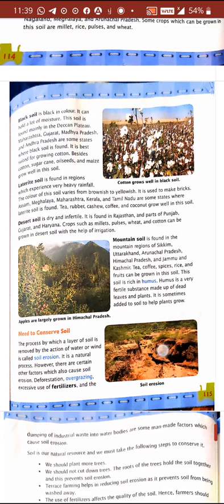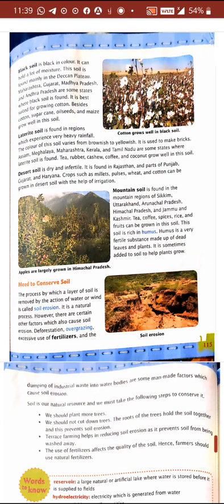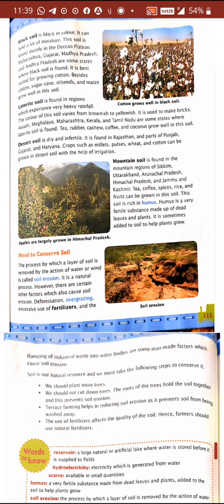Black soil is black in color and holds a lot of moisture — it can store a lot of water. It is mostly found in Gujarat, Madhya Pradesh, and Maharashtra. We can grow cotton very well in black soil.